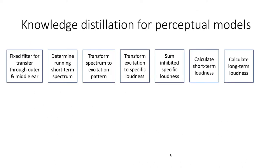Two years ago, we were the first to use knowledge distillation for a perceptual model. Knowledge distillation was originally developed to replace a complex ensemble of neural networks with a single neural network. The ensemble acts as a teacher and the single network as a student. The teacher is accurate but slow, and the student shall be as accurate but also fast.